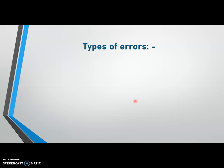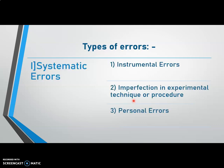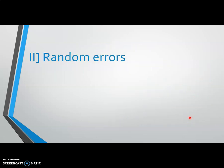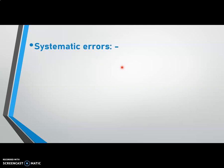There are different types of errors. First, systematic error. These systematic errors occur in the measurement due to three different causes: instrumental error, imperfection in experimental technique or procedure, and personal error. The second type of errors are random errors, which occur randomly in the measurement of physical quantity and which we cannot eliminate completely by taking all the precautions. Let us see these errors in detail.